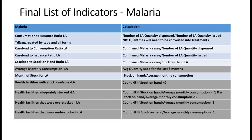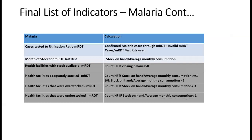In the configuration process, the average monthly consumption is configured first using predictors, and its output then becomes the denominator for the month-of-stock calculation and for stock status indicators. Additional indicators check cases tested using mRDTs against mRDTs actually used from the pharmacy, and months of stock for mRDT test kits, along with availability, adequately stocked, overstocked, and understocked facilities. Indicators highlighted in gray are those configured using predictors.